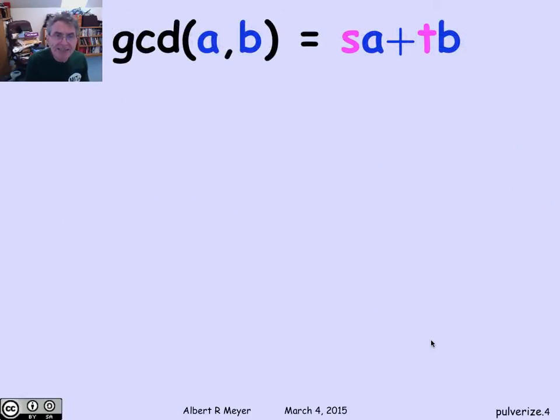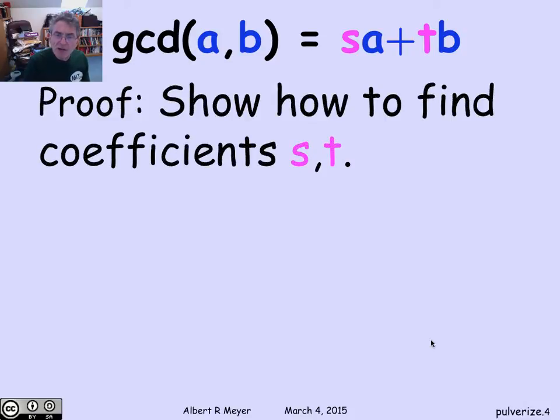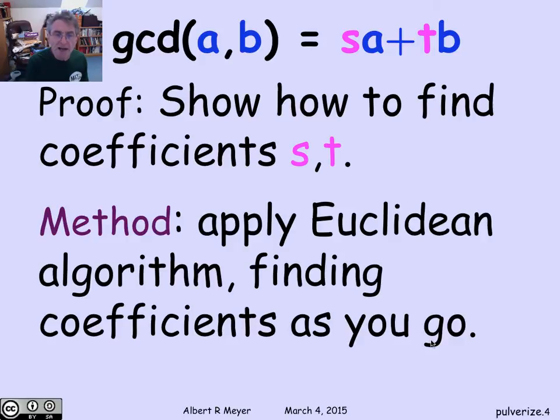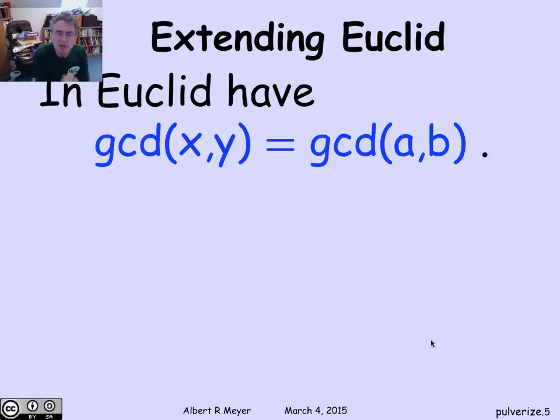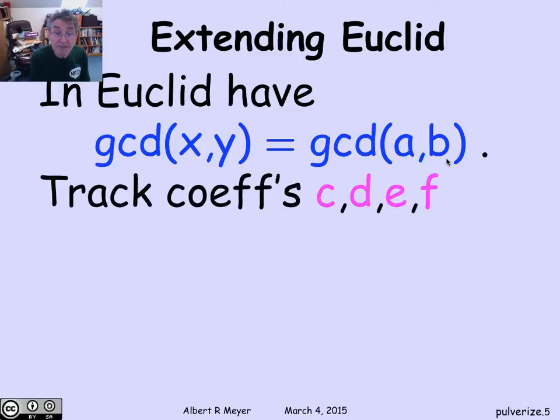How do we get s and t? Well, the basic idea is that we're going to find these coefficients by applying the Euclidean algorithm. And as we go, we're going to be calculating coefficients. And eventually, when we're all finished, we'll wind up with the s and t. Specifically, let's remember the Euclidean algorithm starts off with a and b, and then it has two registers or numbers, x and y, that it keeps updating.